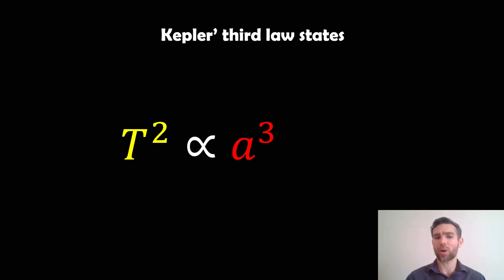Now I think in one of my other videos I might use P instead of T for orbital period, but T and P can be the same thing, just depends how I've written it. So the square of the orbital period is proportional to the cube of the semi-major axis.